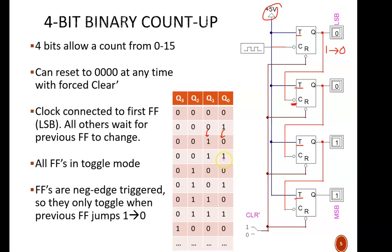Again, we see here that Q0 drops high to low, and Q1 toggles. That's why this Q1 flip-flop will toggle when it senses a negative pulse from the Q0 flip-flop.